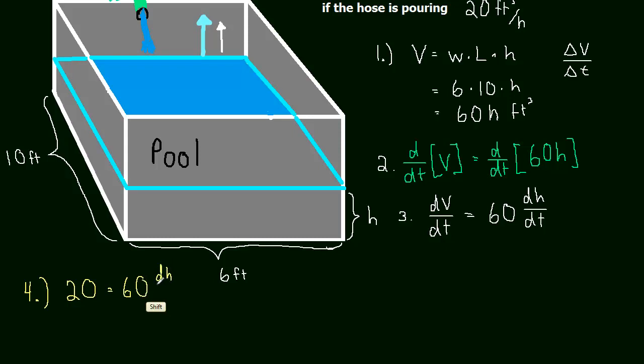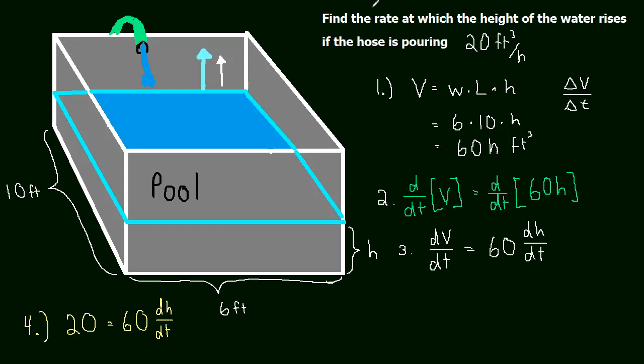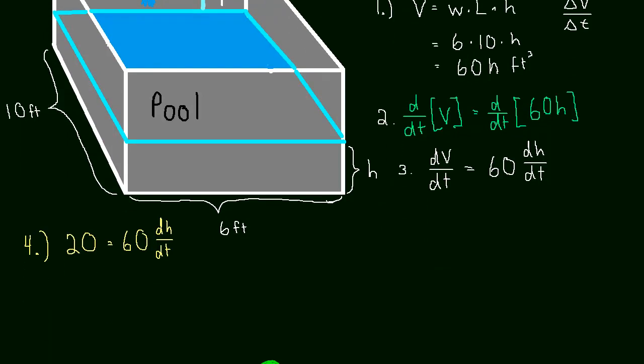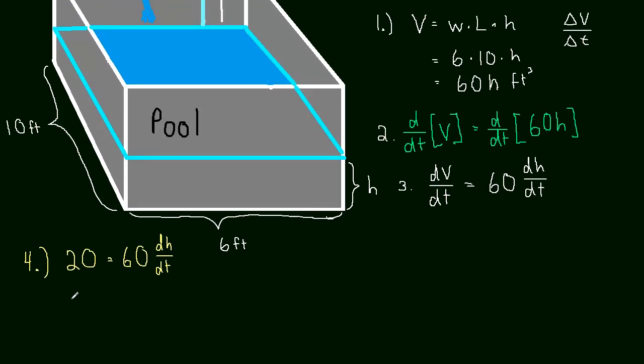And dh/dt is what we're after. It's how much is the height changing per unit of time, the instantaneous rate of change of the height. That's really what dh/dt is. So the rate of change of the height, that's what they asked us for. Find the rate at which the height of the water rises.